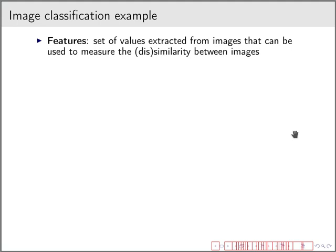In order to do that, it's very hard to work with the actual pixels of the image. We already discussed that in the course and that is why we use features instead of the actual values of the pixels. A feature is a set of values that are extracted from images and that can be used to measure similarity and also dissimilarity between images.